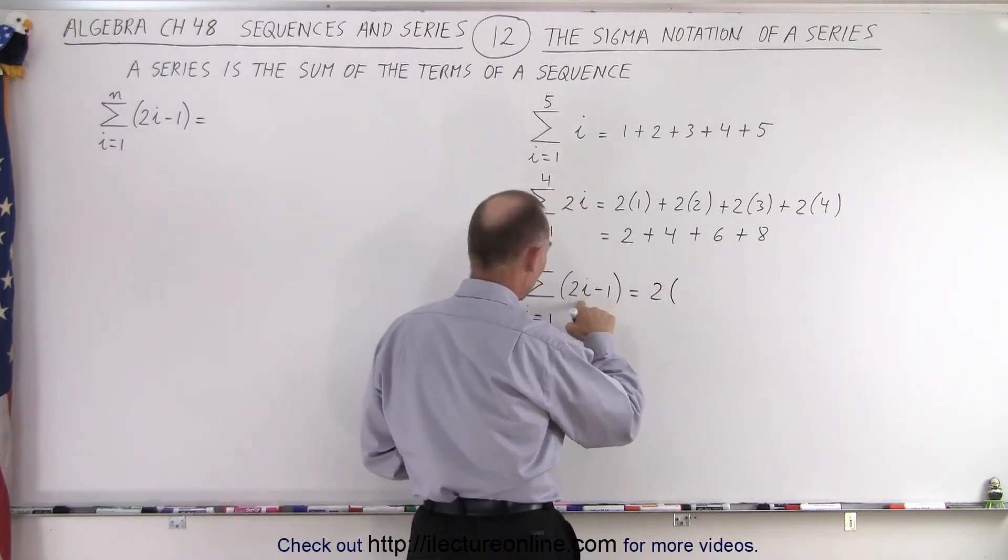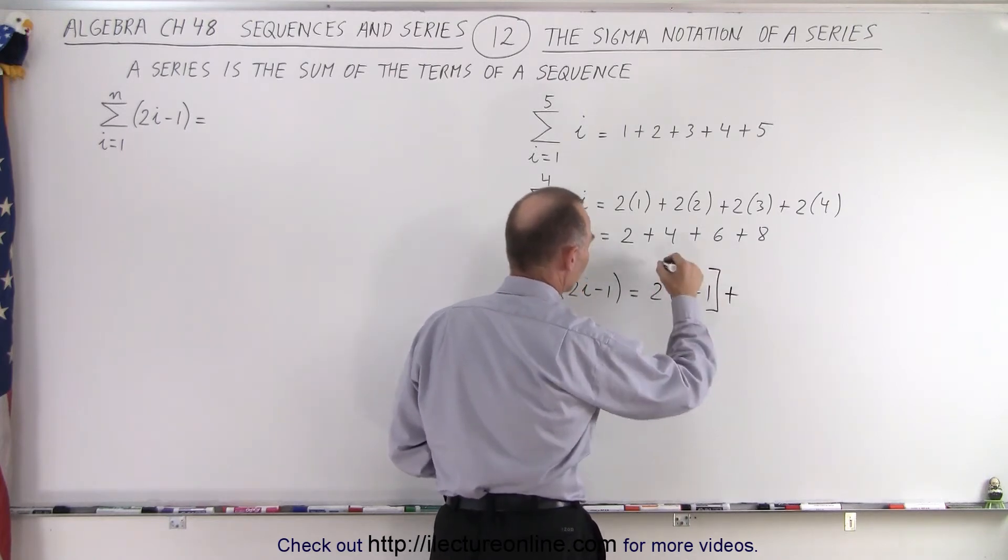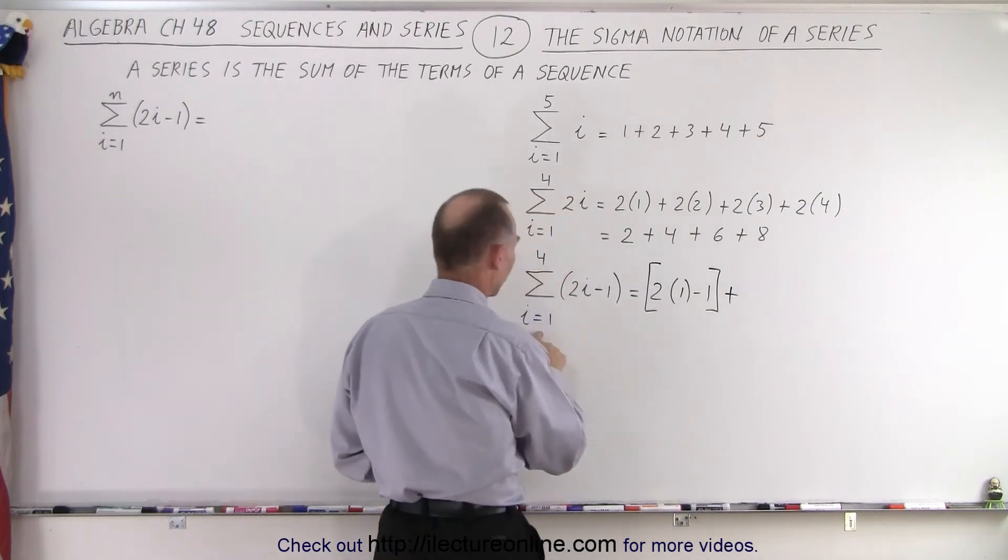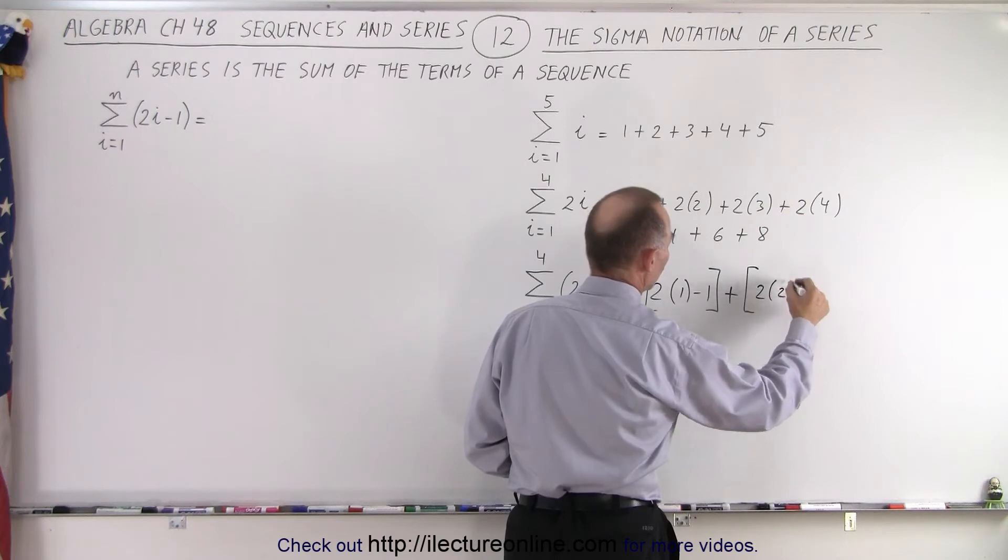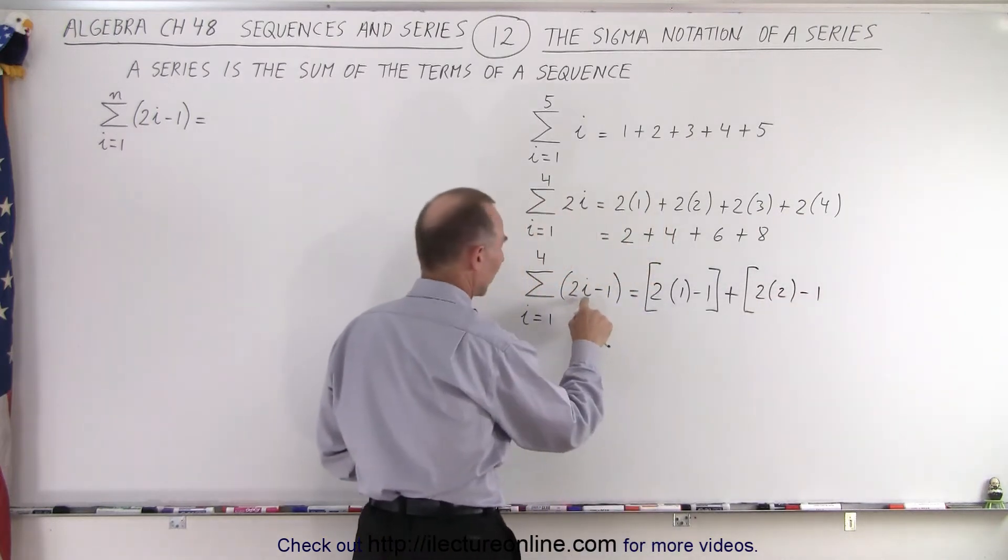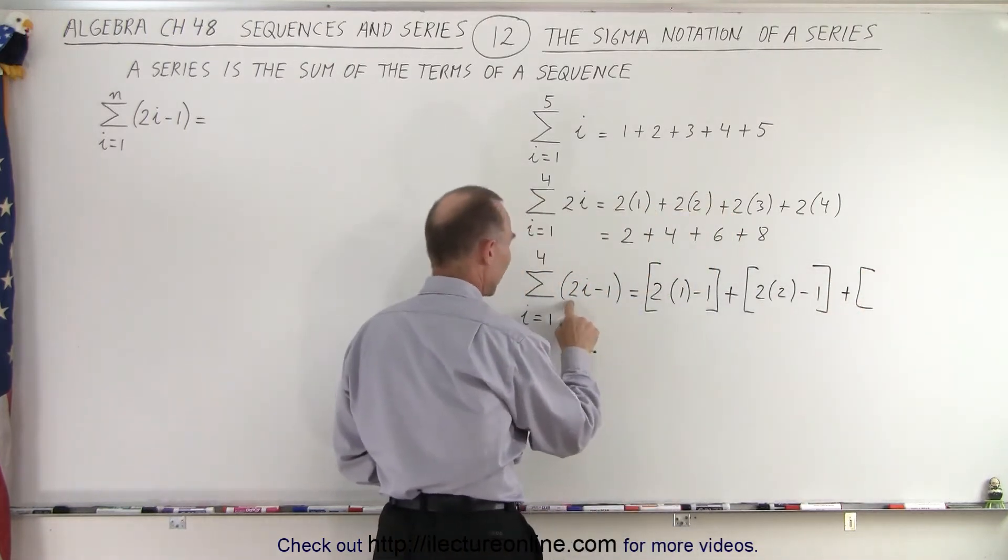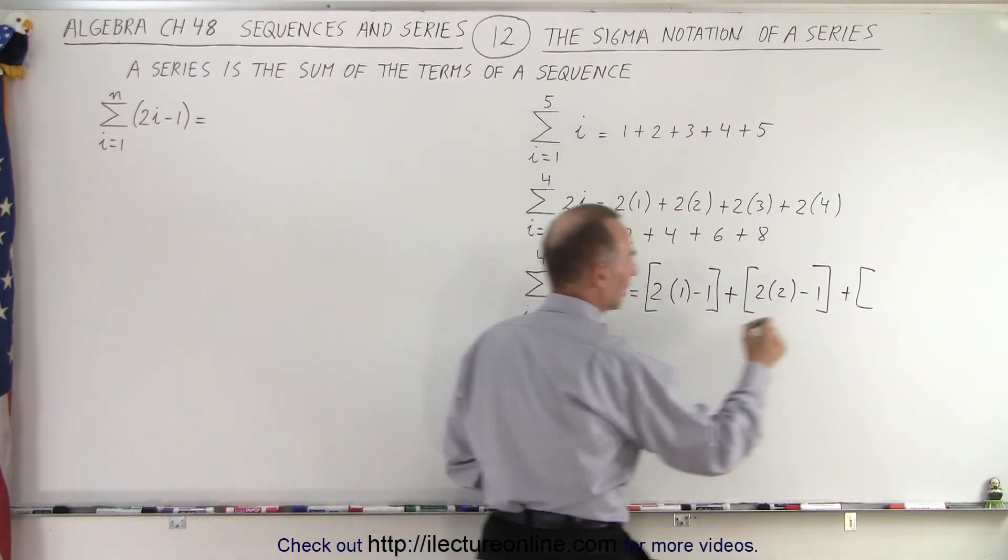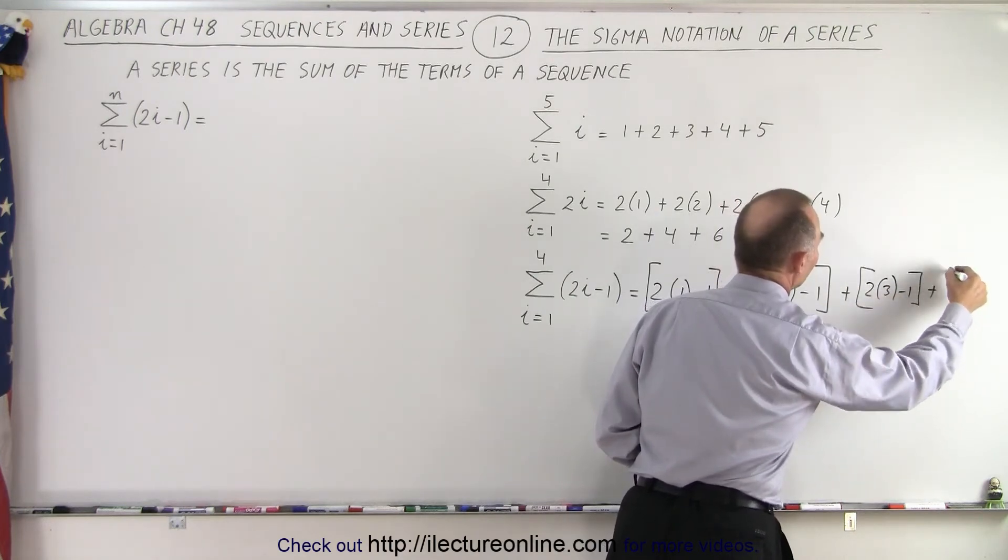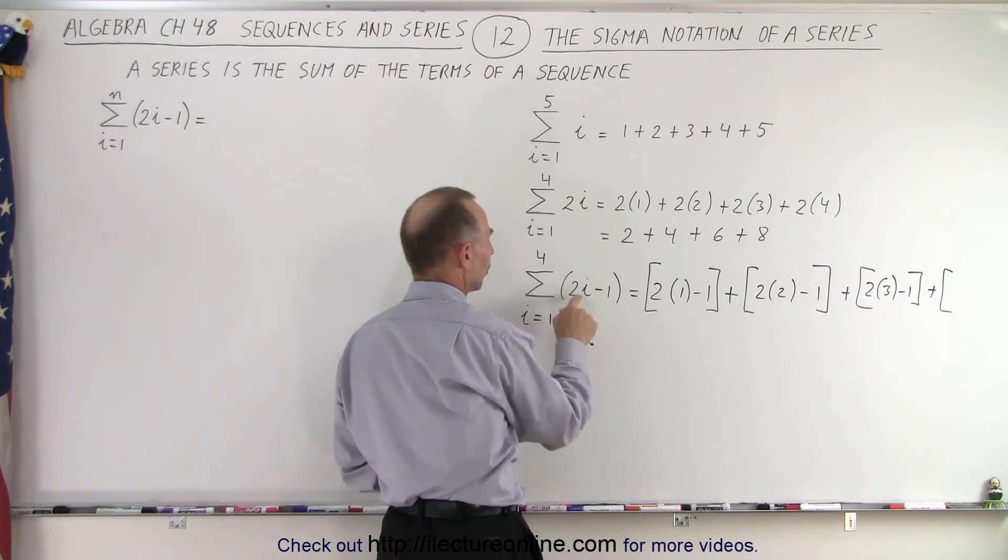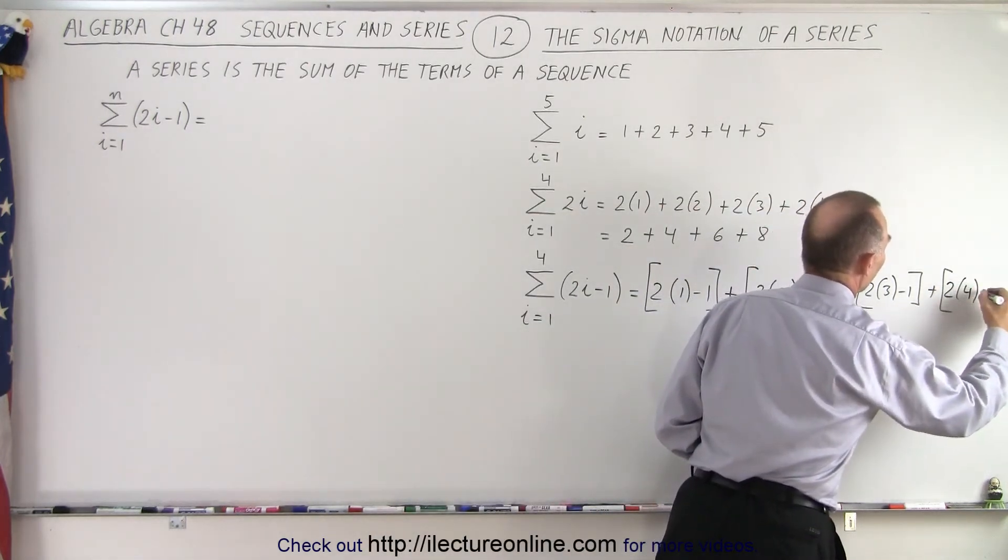2 times i which is starting at 1 minus 1 plus and I'll put brackets around it so that's the first term plus now let i equals 2 so we have 2 times 2 minus 1 so 2 times 2 minus 1 plus now we have 2 times the next value for i which is 3 so 2 times 3 minus 1 and then finally we have the next and the last value for i 2 times 4 minus 1 so 2 times 4 minus 1.